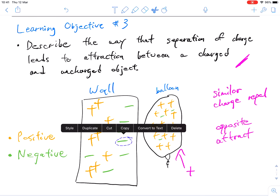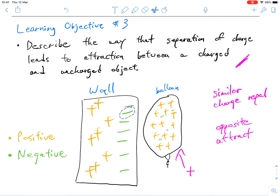And remember also that opposite charges attract. And so we have this massively positively charged balloon. And so the electrons, the negative charges, are going to get pulled closer to the balloon. So what happens is that all of these charges end up rearranging themselves.